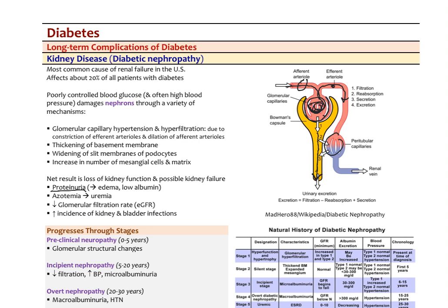Albumin that is not reabsorbed leads to edema and pitting edema accumulating in peripheral tissues. Azotemia — elevation of blood urea nitrogen — is another possible result, which can progress into uremia with symptoms from elevated nitrogen and waste products in the blood. There is a decreased glomerular filtration rate (GFR) and an increased incidence of kidney and bladder infections because all that glucose in the urine makes patients more susceptible to infection.